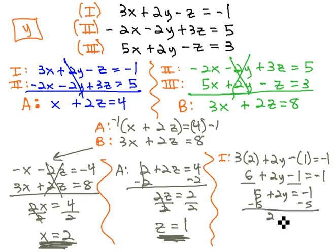Subtract 5 from both sides, 2y is negative 6. Divide both sides by 2, and we know y is negative 3.